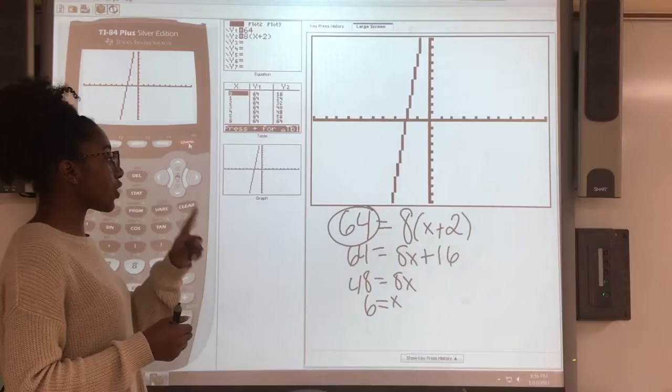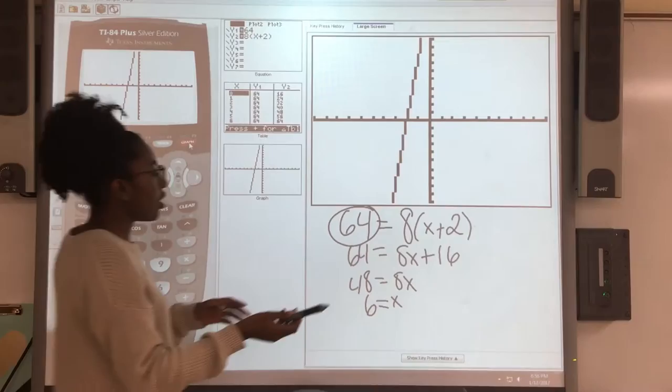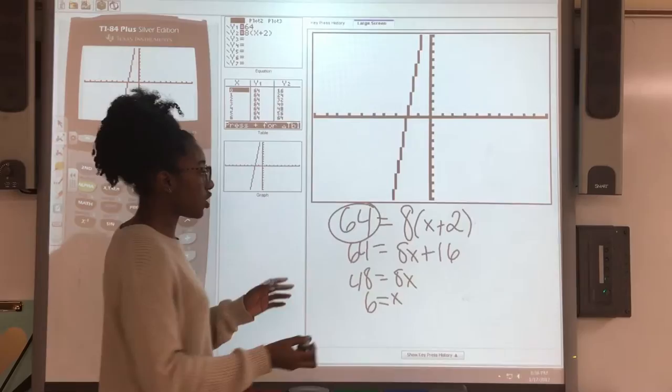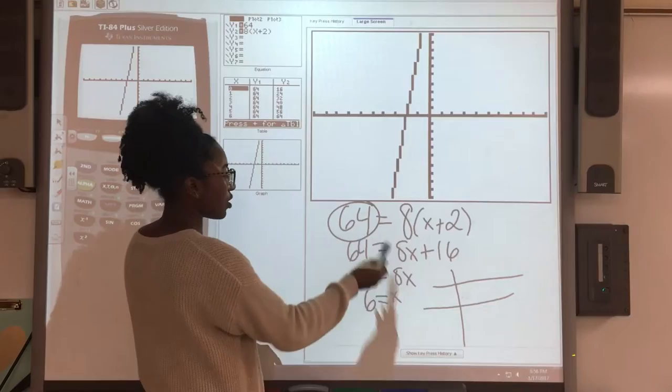There are actually two ways to change that. The first way would be to change the windows. When you're graphing something, we know that the first equation was y equals 64. When y is equal to a constant, you know it's just going to be a straight line, just like that.